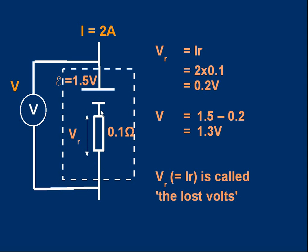That means when we work out the terminal PD, we have to subtract the effect of the internal resistance from the EMF: EMF minus internal resistance voltage, 1.5 minus 0.2, equals 1.3. We appear to have lost some voltage — the EMF was 1.5, but the voltmeter says the cell is only supplying 1.3. We've lost 0.2 of a volt, and that's why the voltage across the internal resistance — which is its current times little r — is called the lost volts. It's a voltage we have to subtract from the EMF to get the terminal PD.